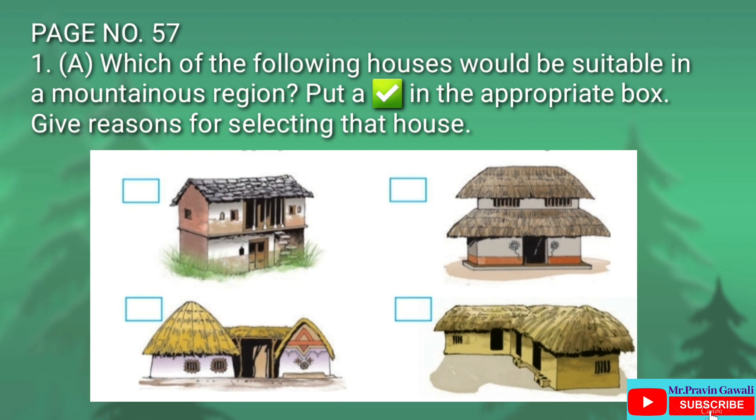Question 1a: Which of the following houses would be suitable in mountainous regions? Put a tick mark in the appropriate box and give reasons for selecting that house. In a mountainous region, multi-storied houses would be suitable because of non-availability of plain surface and availability of water in rivers.